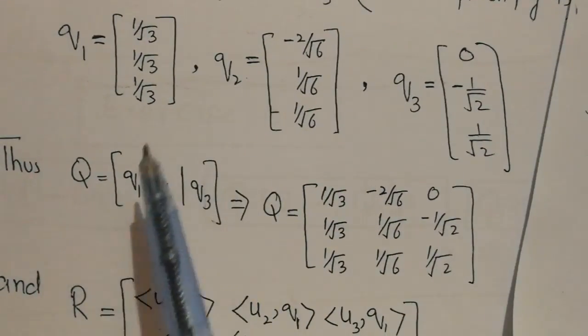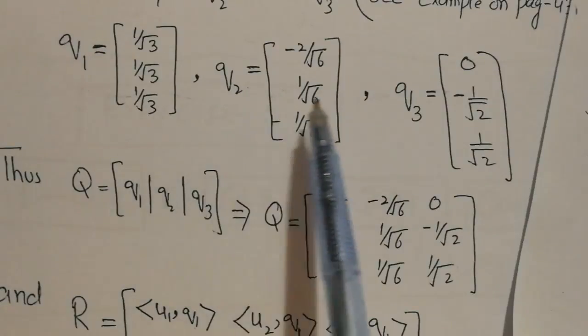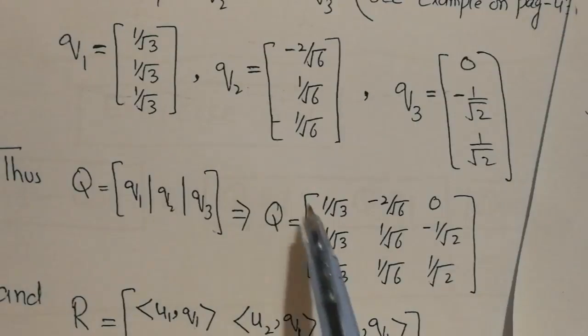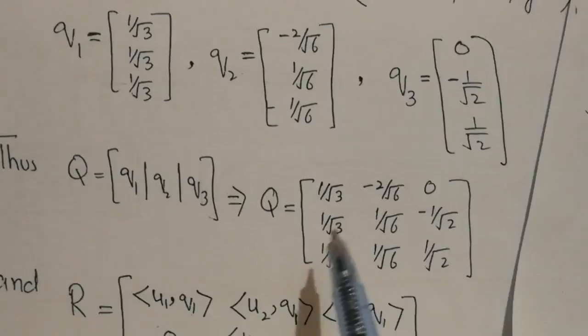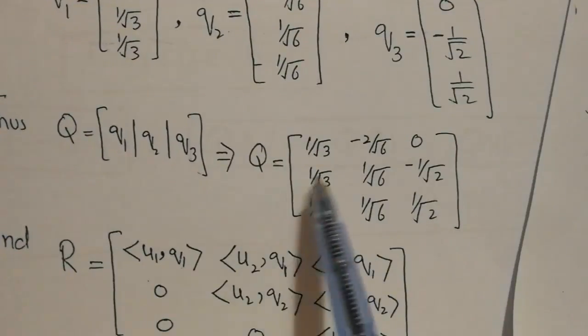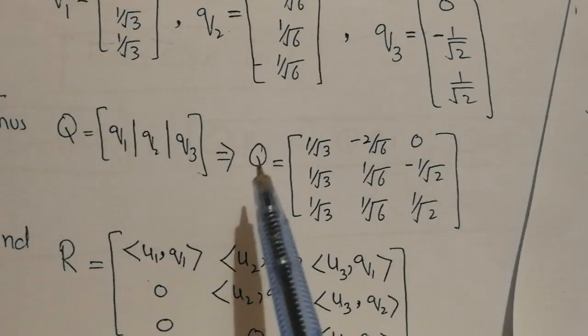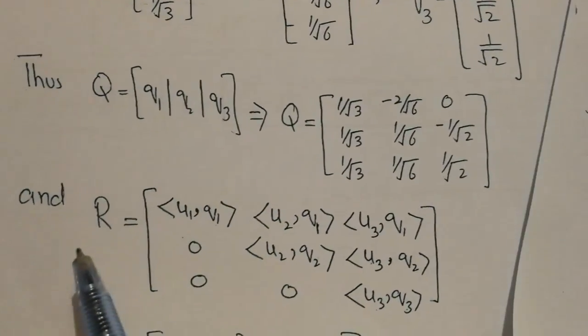By arranging these Q vectors as columns, we get matrix Q with columns Q1, Q2, and Q3. We have achieved one objective: obtaining Q. The next step is obtaining R.